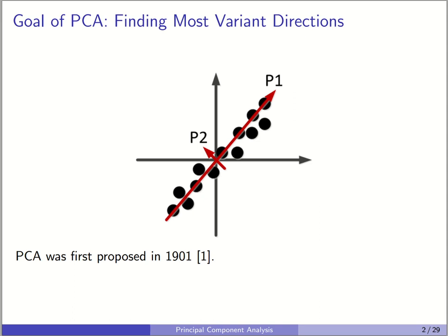The goal of PCA is to find the most variant directions of data. Assume that we have a cloud of data as you can see in this figure. We have several directions in data where we can say that this direction has more variance than that direction. We can sort different directions according to the variance of data. If we use all directions of PCA, like P1 and P2, this is like a rotation of coordinates. If we use all directions of PCA, which capture the different variance directions of data, then PCA is just a rotation.